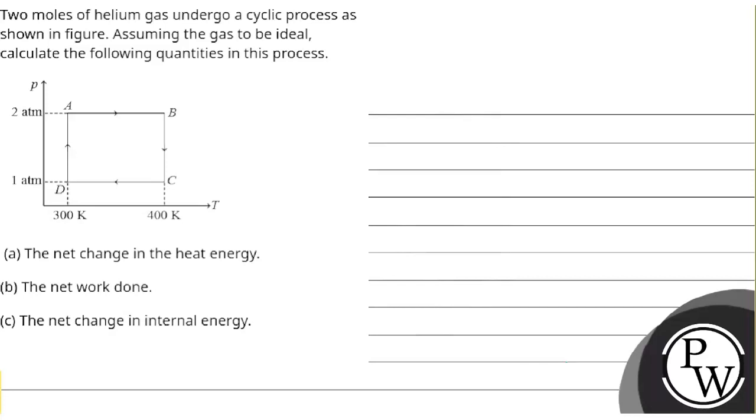Hello, let's see this question. Two moles of helium gas undergo a cyclic process as shown in figure. Assuming the gas to be ideal, calculate the following quantities in this process: the net change in the heat energy, the net work done, and the net change in the internal energy.